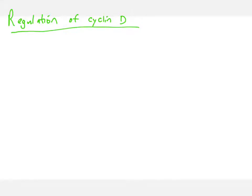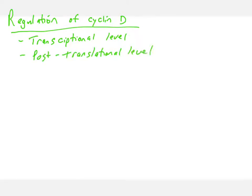Cyclin D is tightly regulated in many different ways. I want to talk about two different ways cyclin D can be regulated in cells: at the transcriptional level and the post-translational level. We're going to talk about the transcriptional level first and the post-translational level second.